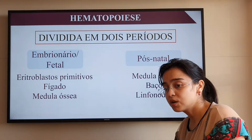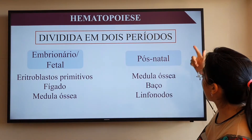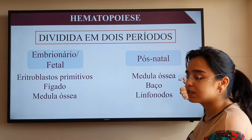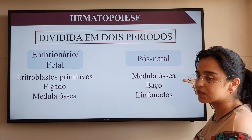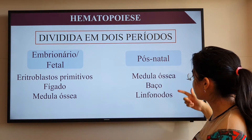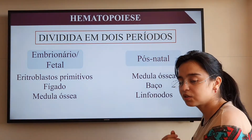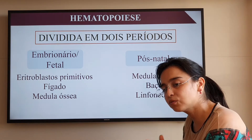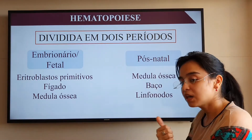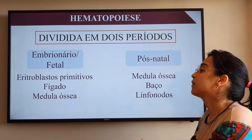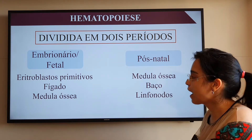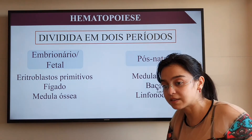Após o nascimento, a função de hematopoiese — a síntese dos elementos figurados do tecido sanguíneo — passa a ser desempenhada principalmente pela medula óssea. Há também associação com o timo e os linfonodos, envolvidos principalmente no processo de maturação desses elementos figurados, especialmente dos linfócitos T e B. A principal fonte dessas células após o nascimento e até a fase adulta é a medula óssea.